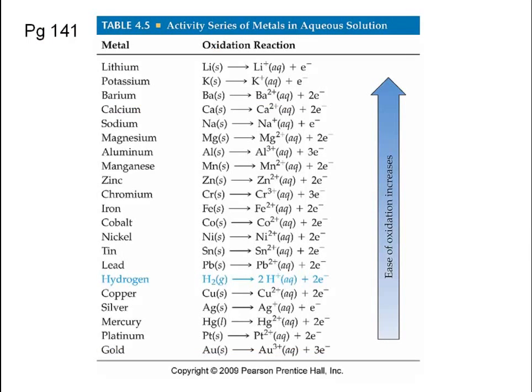At the very top is lithium — the metal that will react the most. Gold, platinum, silver, and copper are at the bottom; we don't want those to be reactive, which is why we use them in jewelry and piping. Wearing a potassium ring or necklace wouldn't last very long — potassium is going to react with a lot of things.